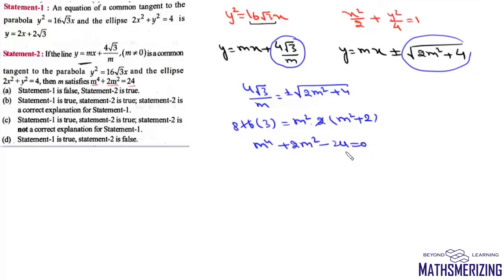We'll simplify this: (m^2 + 6)(m^2 - 4) = 0, so the value of m is ±2. That means statement 2 is correct. We get the same equation m^4 + 2m^2 = 24, and from here we get m = ±2.